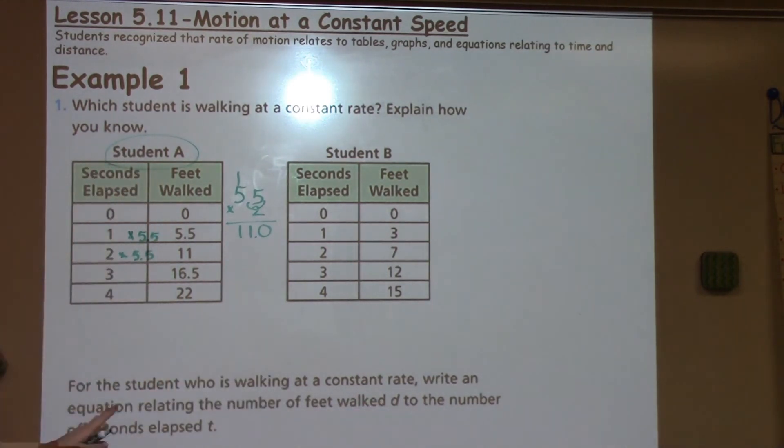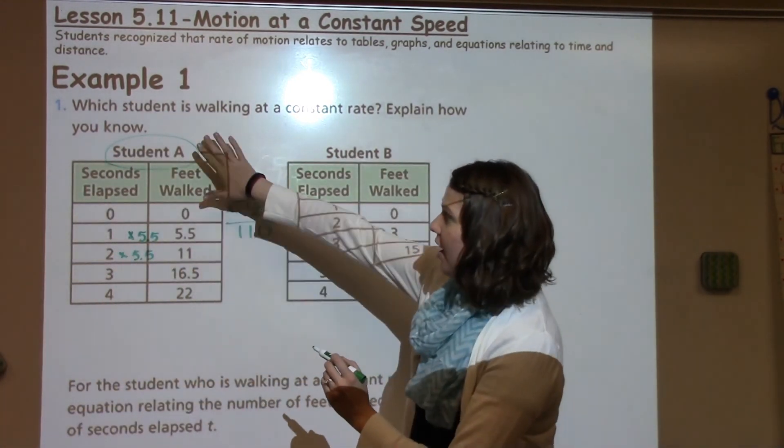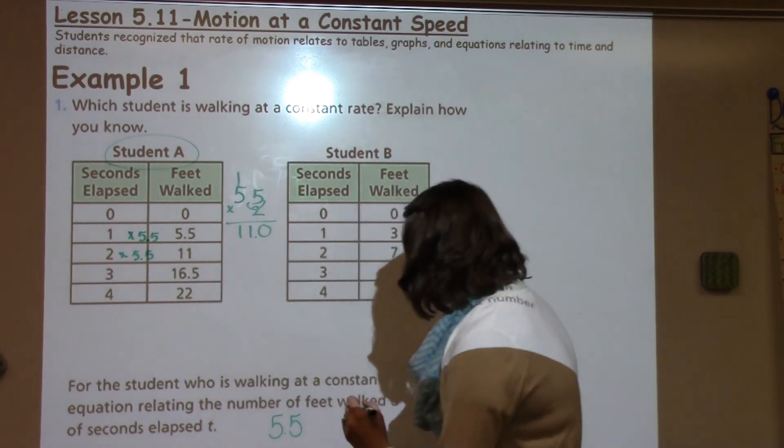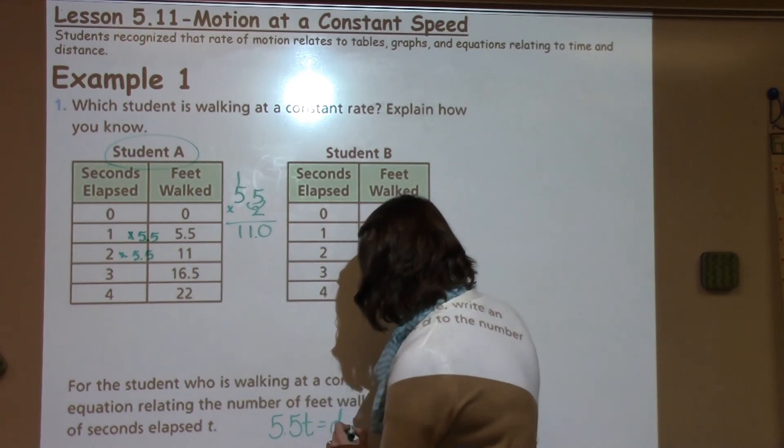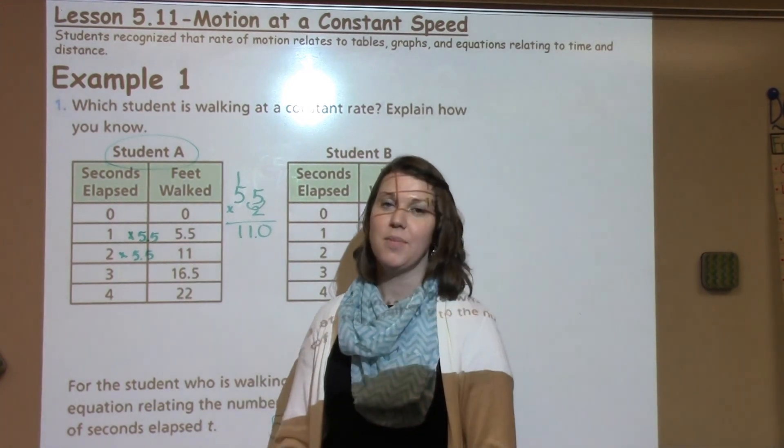So we're going to take our 5.5, which is from our table above, times our time T, which gives us our distance D, which is how far they have walked. If you have any questions about today's lesson, make sure you see your math teacher.